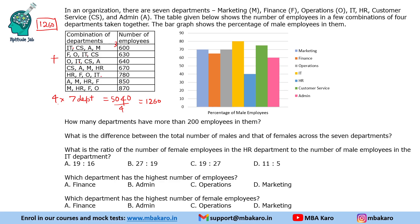To find the number of employees in each department, take one combination - for example, IT, CS, admin, and marketing totals 600. The remaining departments, finance, operations, and HR, will have a total of 660 (since 1260 - 600 = 660). Now looking at the combination with finance, operations, HR, and IT, those first three total 660, so IT will have 120 employees, making that group 780.